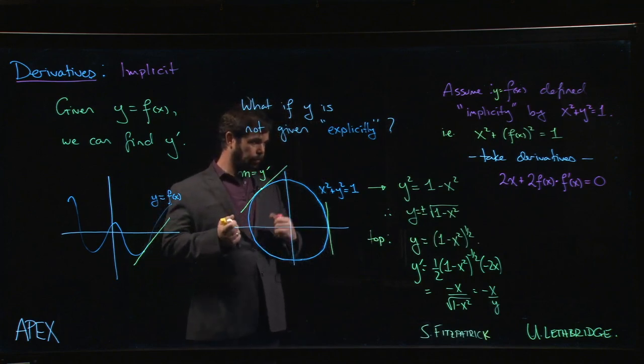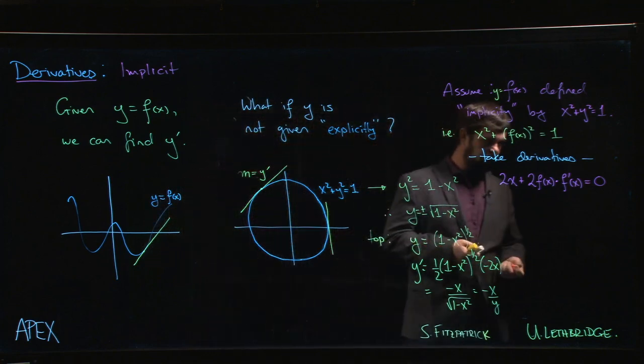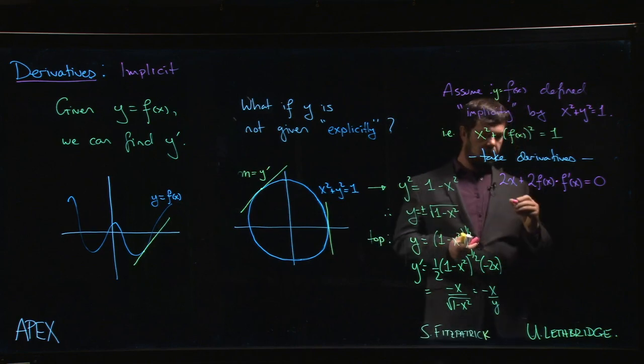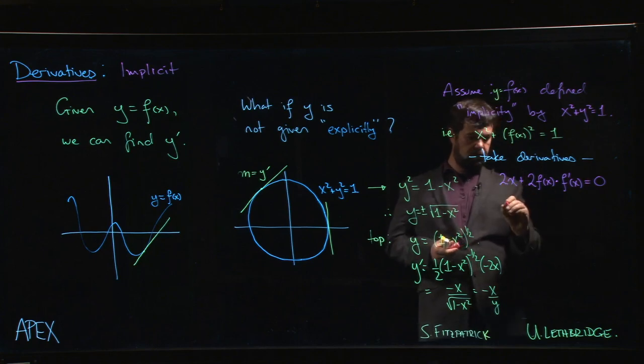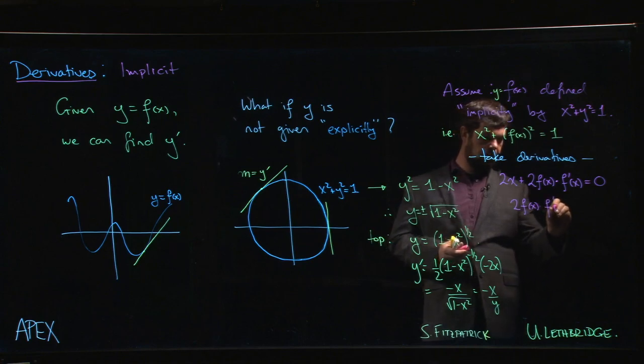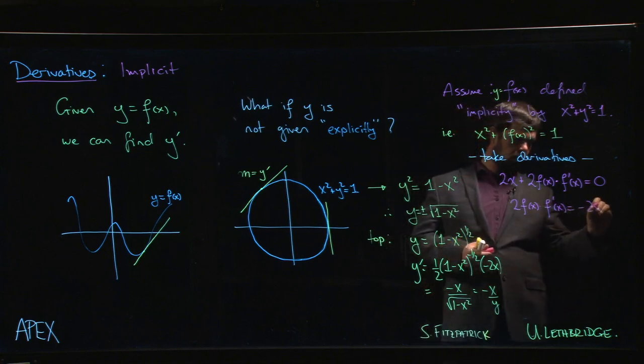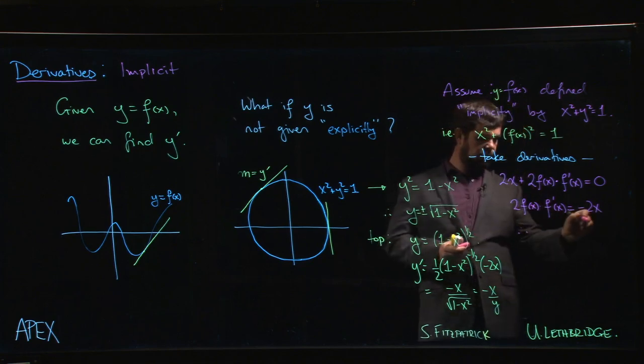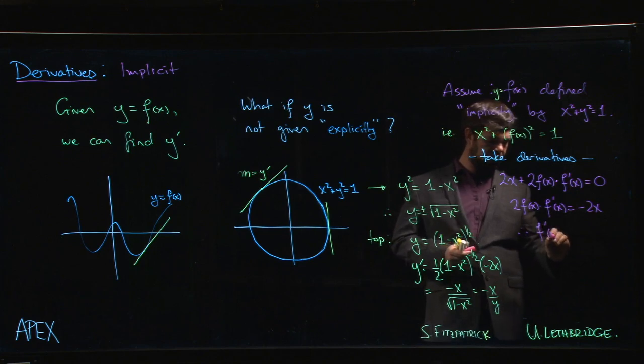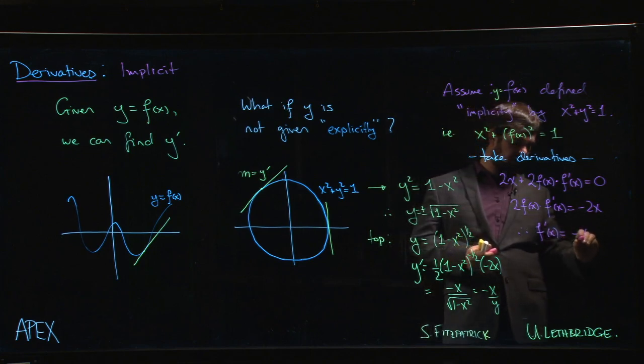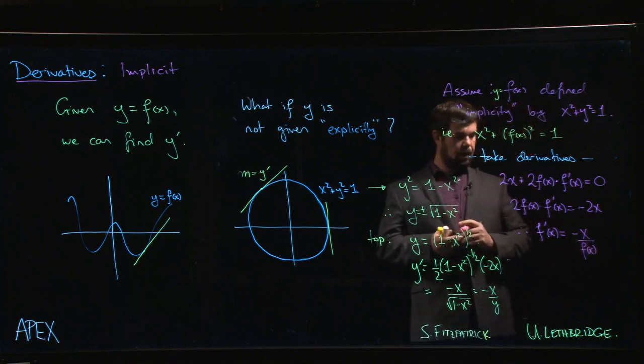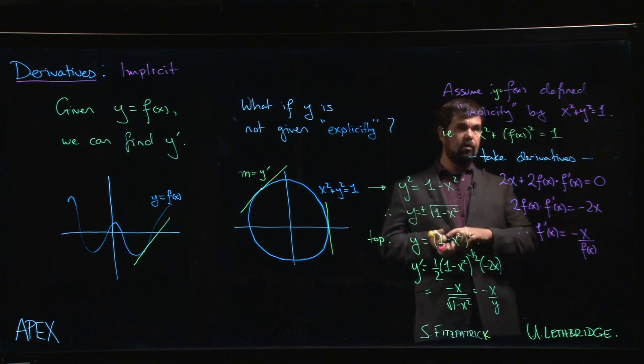So then we say, well what is it we're actually interested in? What we're actually interested in here is f prime, so let's solve for it. Let's take 2x, throw it on the other side. 2 times f of x times f prime of x is equal to minus 2x. Divide both sides by 2 times f of x. The 2s cancel and we get f prime of x is equal to minus x over f of x.